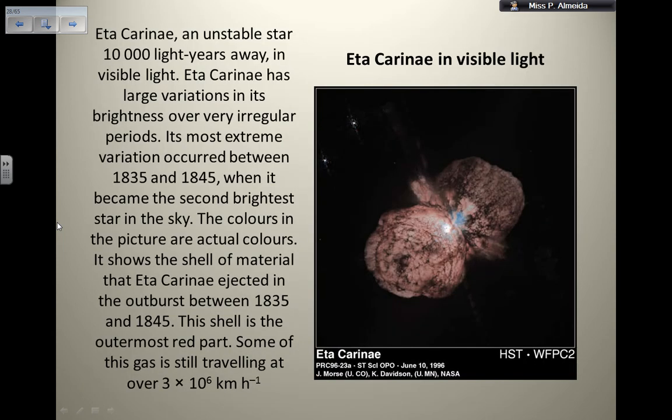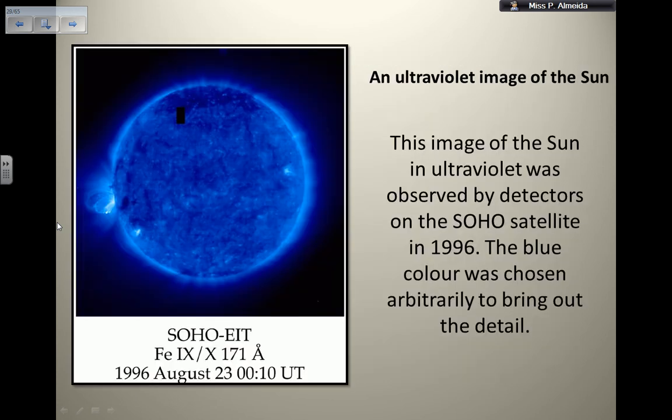Other examples, I have Eta Carina in visible light in here. And then I have an ultraviolet image of the sun just to stand out some of the things a little bit better. Here, for example, I have the sunspots where there is quite a lot of activity here. So maybe a visible image would not show me the same, right?